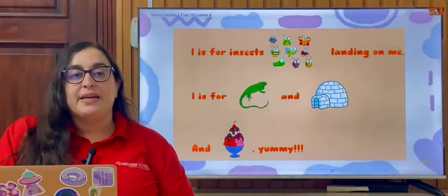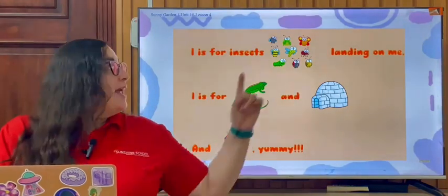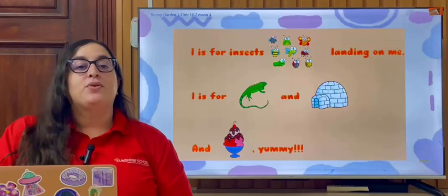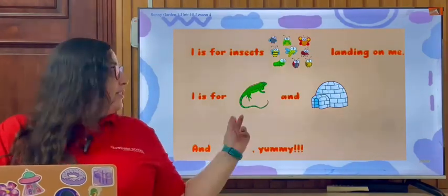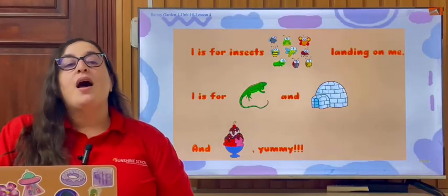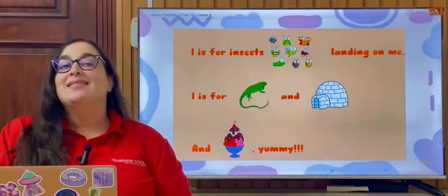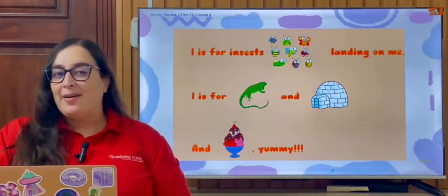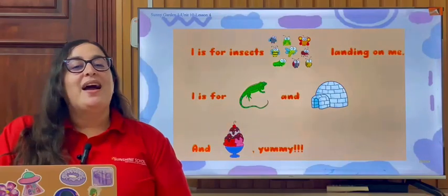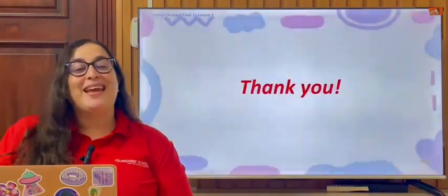One more time — I is for insects, landing on me. I is for Iguana and igloo, and ice cream yummy. A bit faster — I is for insects, landing on me. I is for Iguana and igloo, and ice cream yummy. That's it for today, thanks everyone, bye!